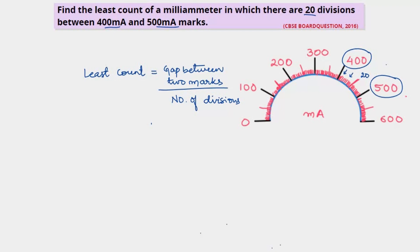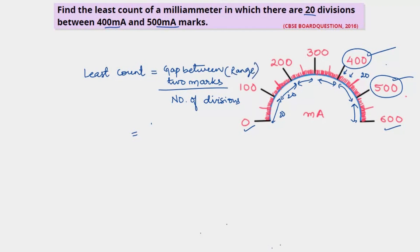What is the gap between two marks? We can take 0 and 600, but since we have been given that we need to find it between 400 and 500 milli ampere, we'll use that range. The range given in this question is between 500 milli ampere and 400 milli ampere.